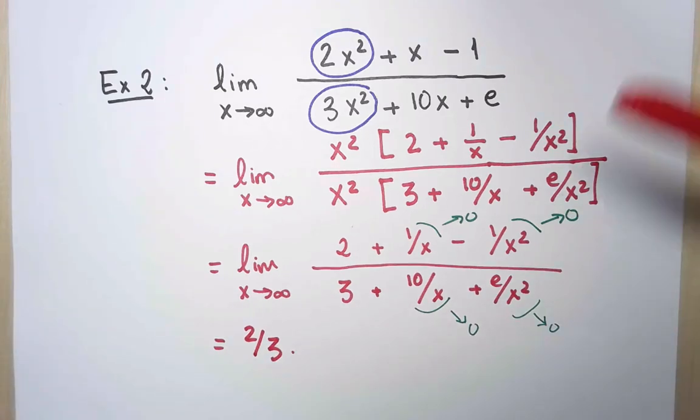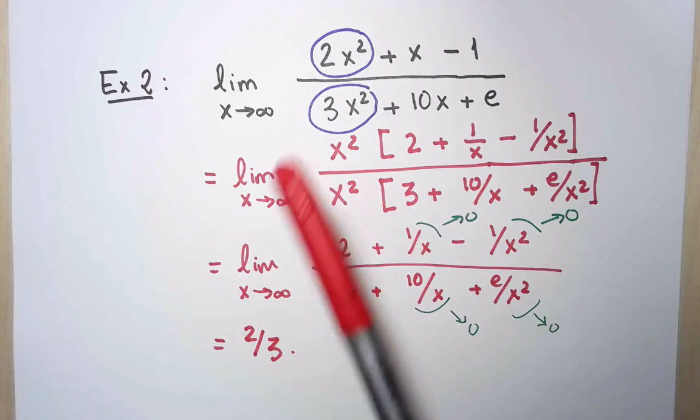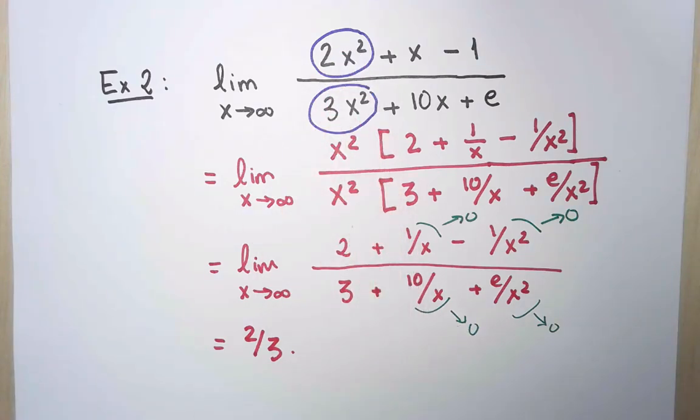Thus justifying that to calculate the limit of a quotient of polynomials like this, I only need to look at the biggest term, both the numerator and the denominator.